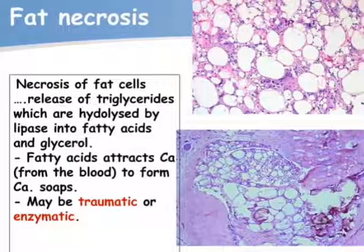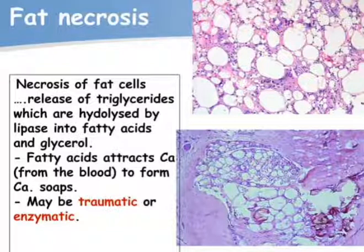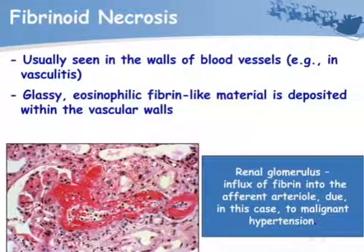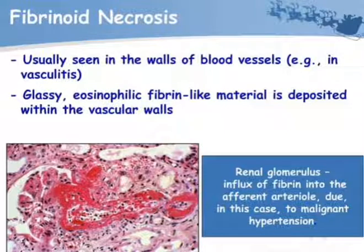Fat necrosis is necrosis of fat cells. Release of triglycerides, which are hydrolyzed by lipases into fatty acids and glycerol; fatty acids attract calcium to form calcium soaps. It may be traumatic or enzymatic. Fibrinoid necrosis is usually seen in the walls of blood vessels; it consists of glassy, eosinophilic, fibrin-like material deposited within the vascular walls, as in renal glomeruli, due to influx of fibrin into afferent arterioles in malignant hypertension.